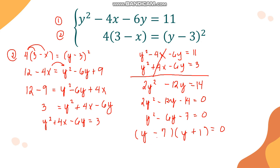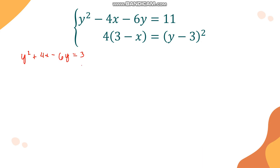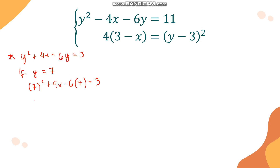Factoring: (y minus 7)(y plus 1) equals 0. Negative 7 times 1 is negative 7, and negative 7 plus 1 is negative 6 ✓. Equating each factor to zero gives y equals 7 and y equals negative 1 as our two values of y.